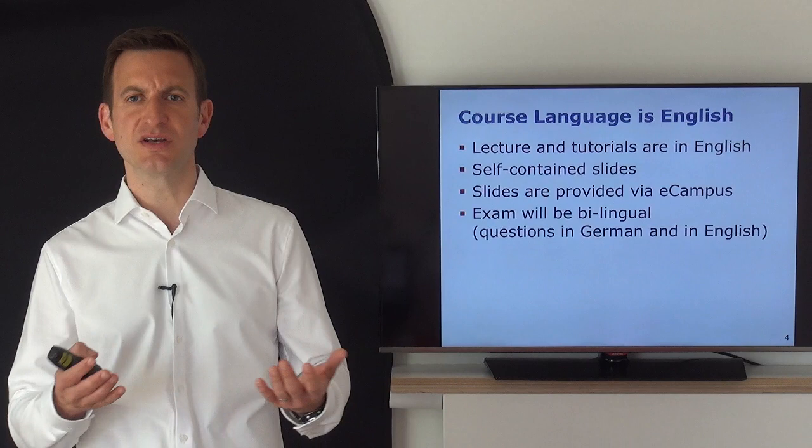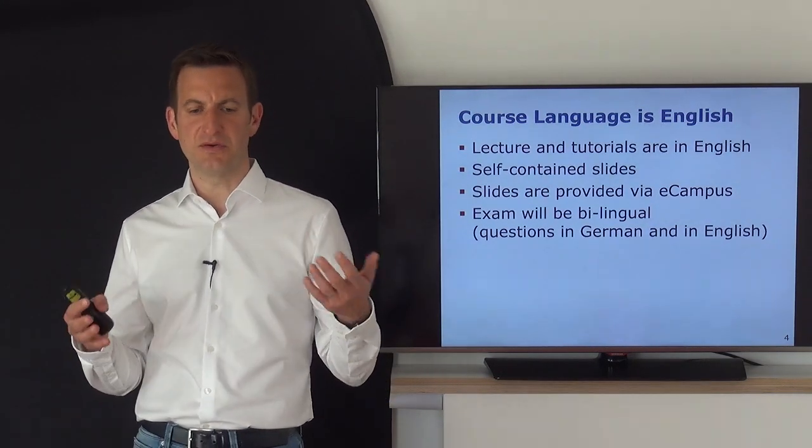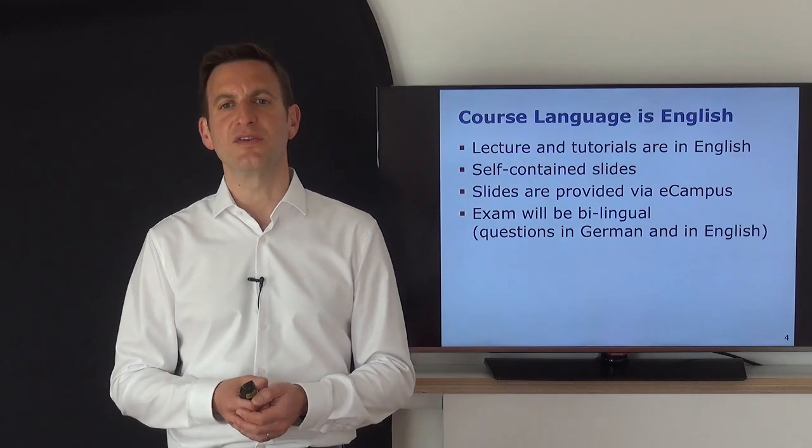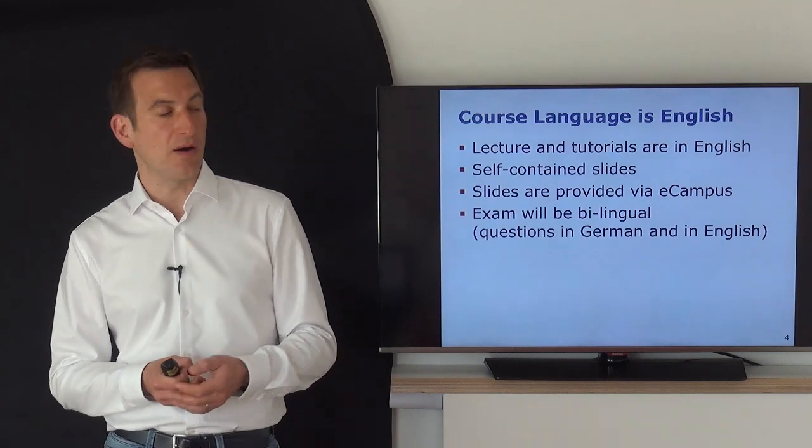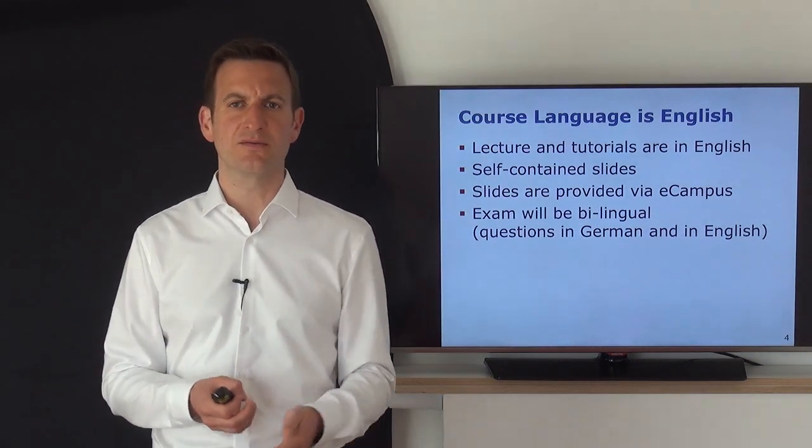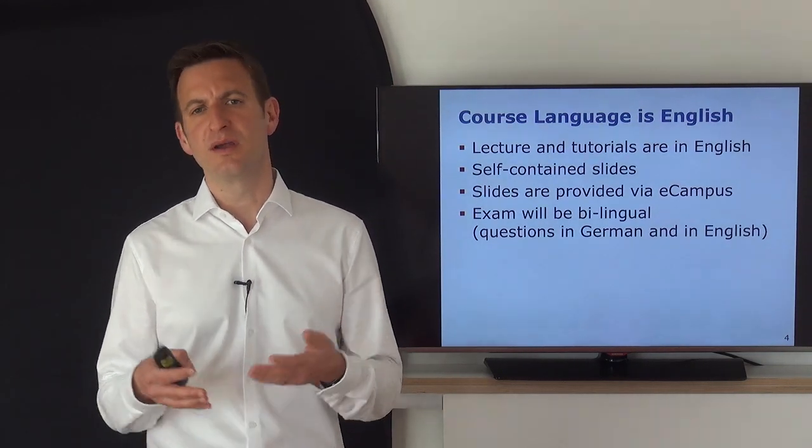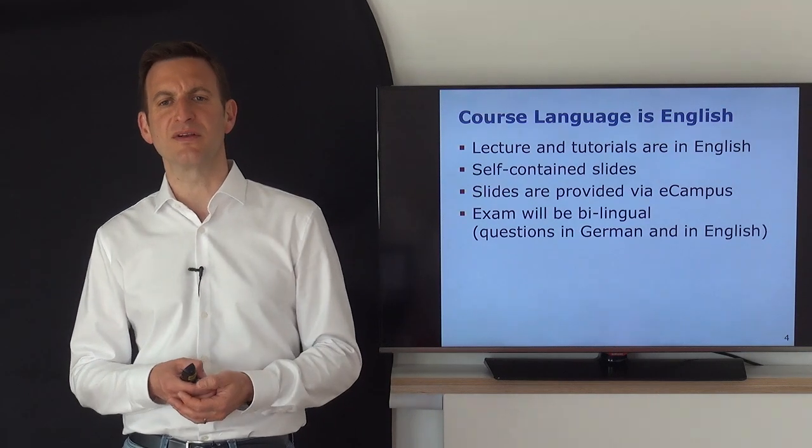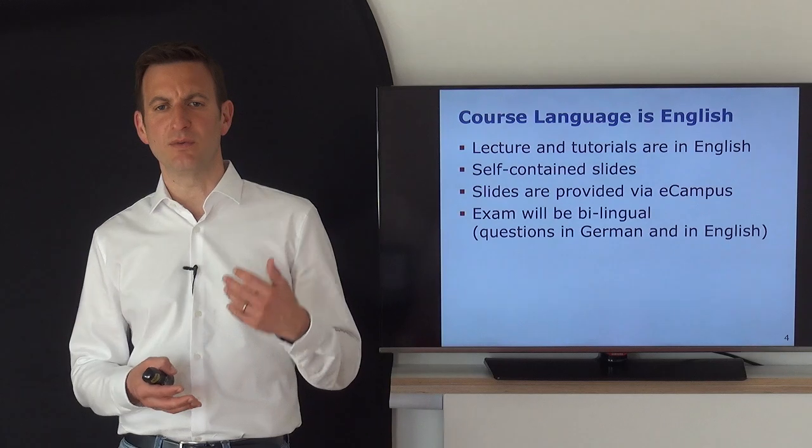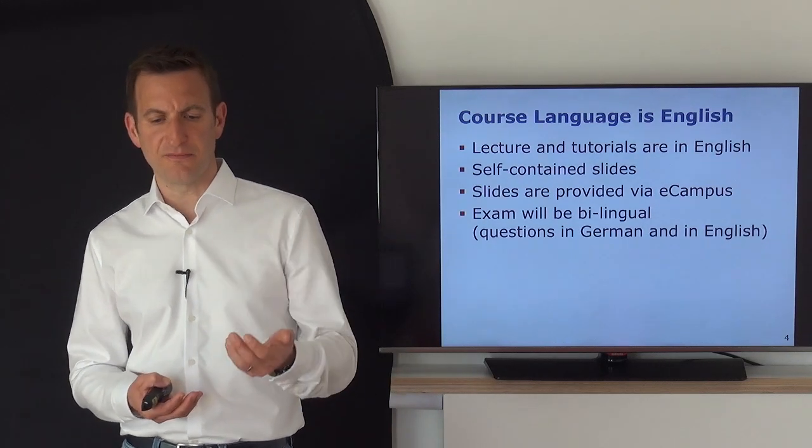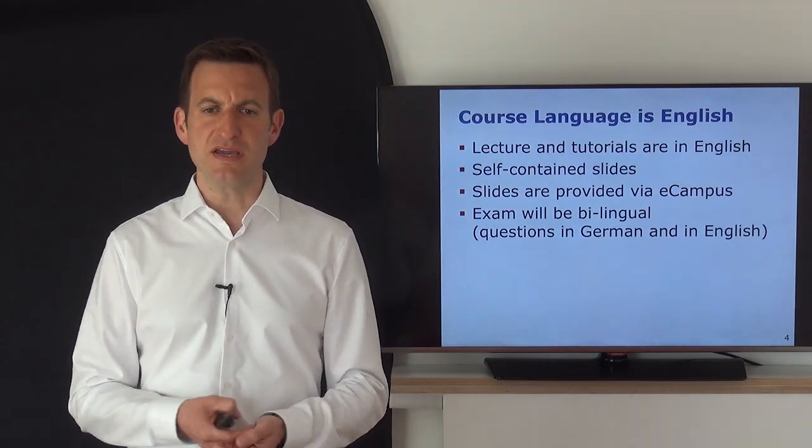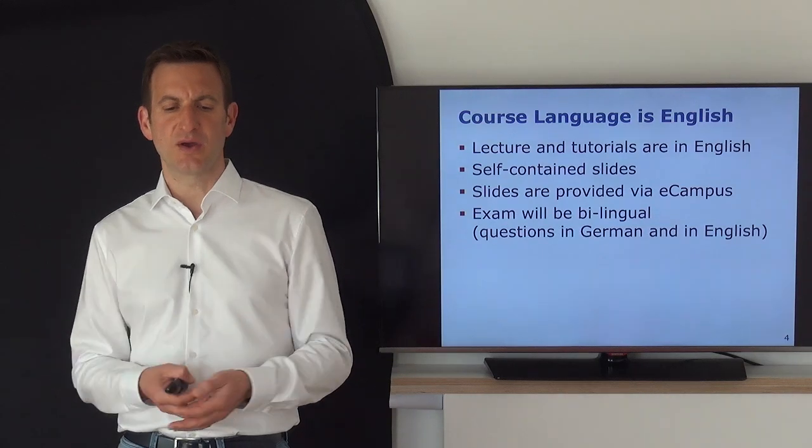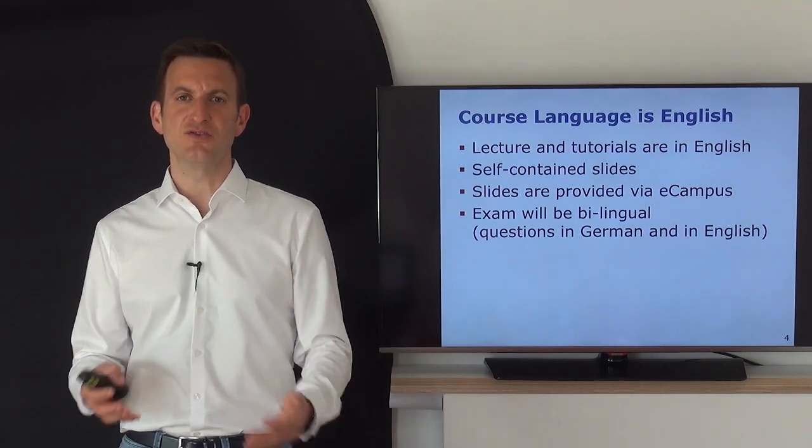The lecture of this course is in English. The same holds for the tutorials. English is the language of science and you need to get exposed to that as early as possible. All the literature will be in English. The slides are self-contained, so typically all the information is given on the slides. There's a good book by Wolfgang Förstner, the Photogrammetric Computer Vision book, if you want to dive more into the details. The slides and materials will be provided through eCampus and our publicly accessible website. The exam will be in German and English, so you can write your answers in either language.